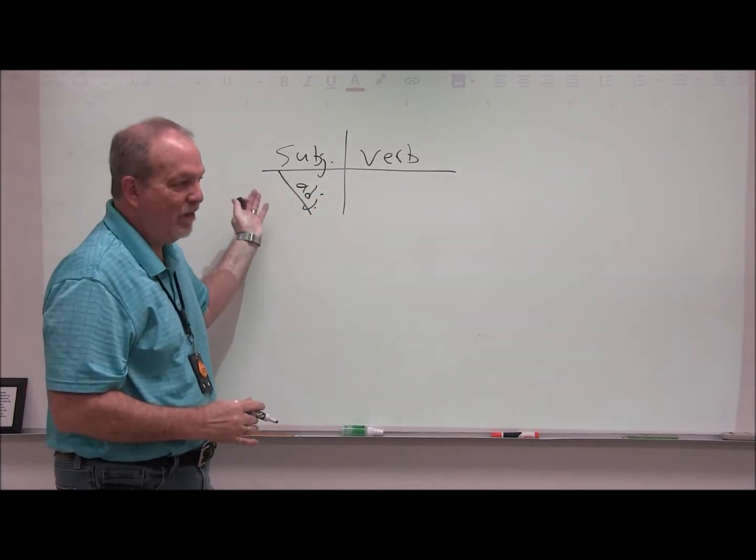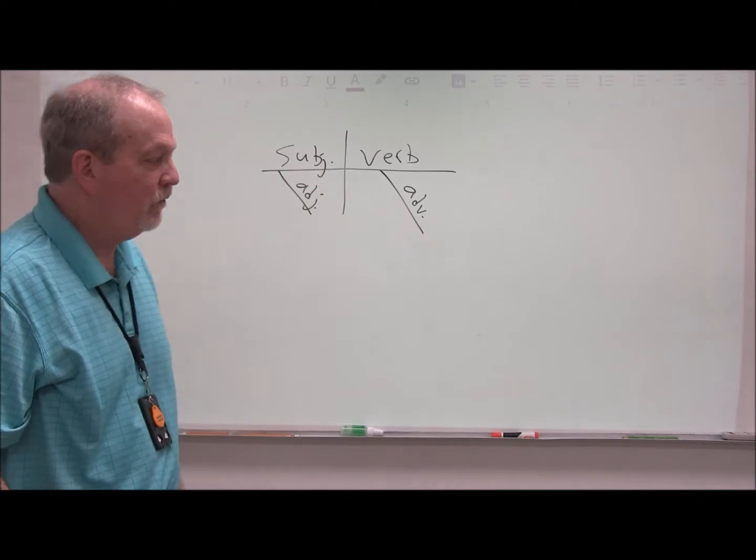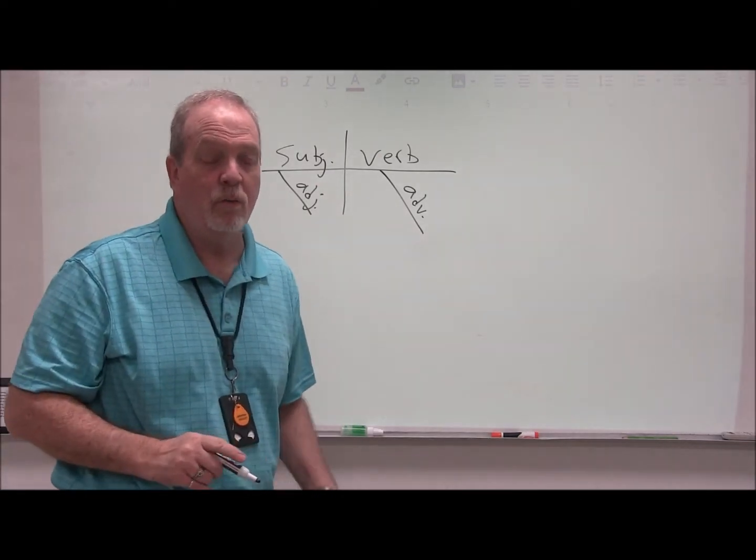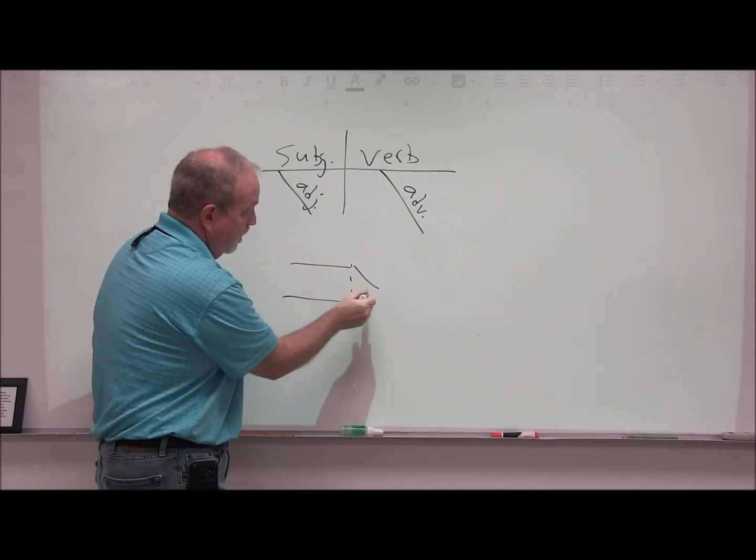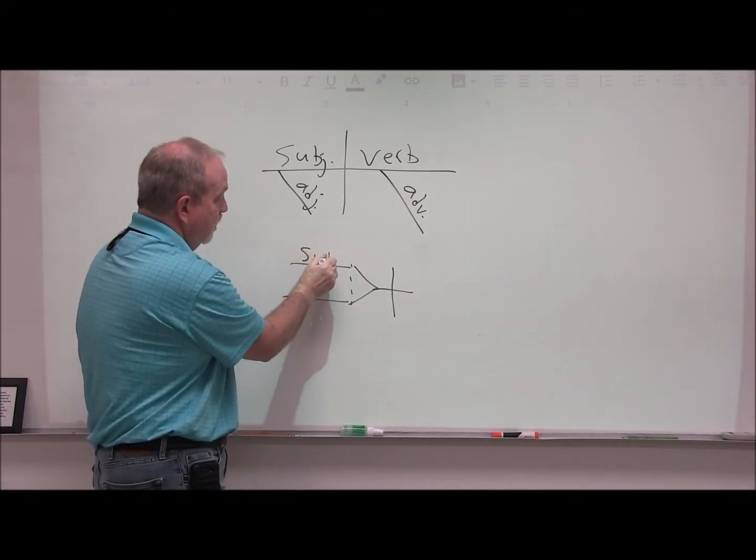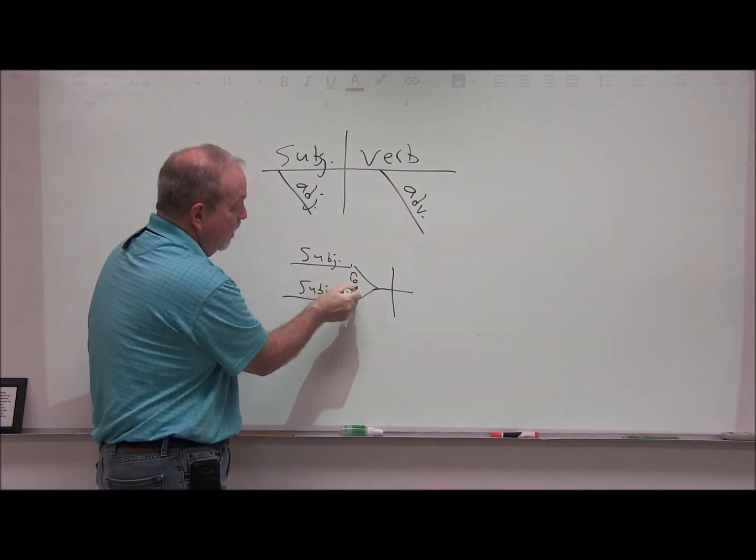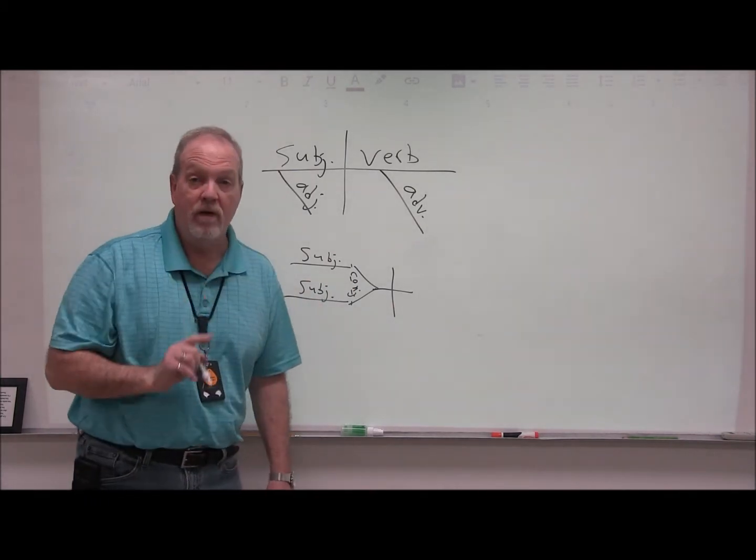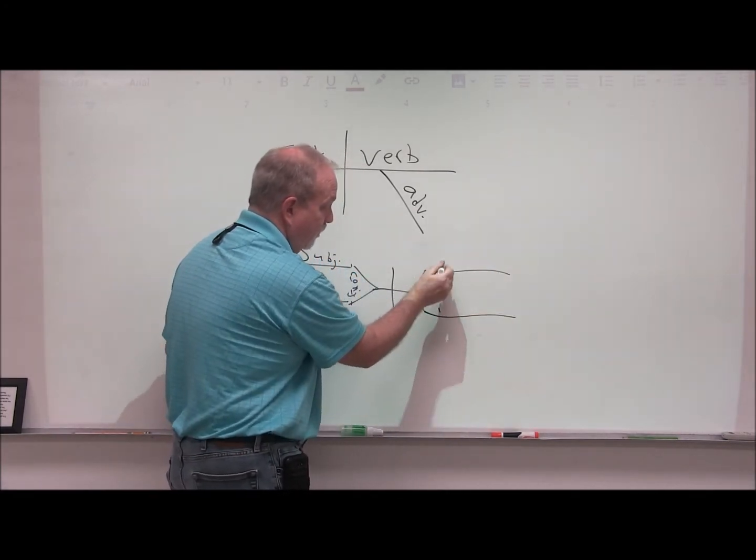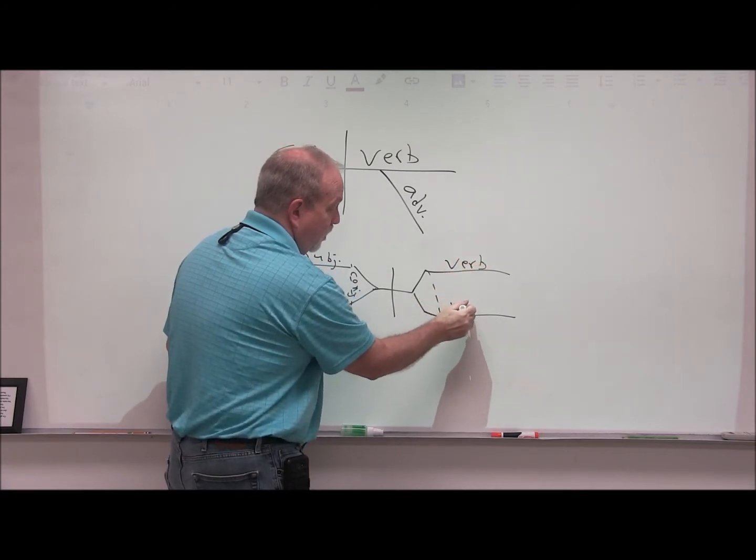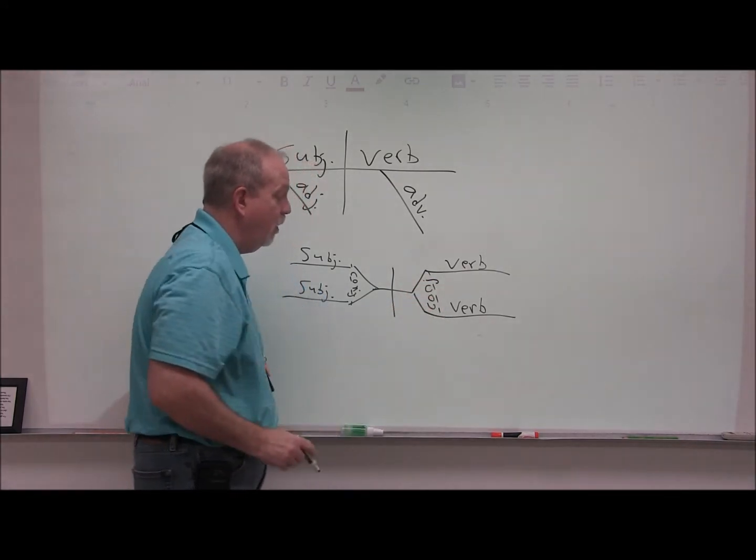Adjectives modify the noun, adverbs modify the verb, and that's how it's structured. If you have conjunctions, which means like say you've got two subjects, your subjects would go on the double prong, and your conjunction would go on the dotted line. What if you have two verbs? You would draw that double prong in reverse. Your verbs would go on the horizontal line, and still your conjunction would go on the dotted line.